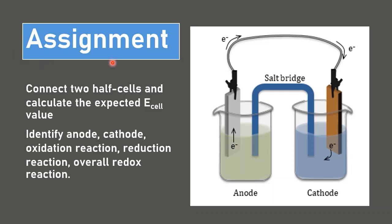Each group has an assignment. You need to construct a galvanic cell by connecting two half-cells and calculate the expected e-cell value using the standard reduction potentials from Table 7.1. From your two half-cells, identify which would be the anode and which the cathode, what the oxidation and reduction reactions are, and what the overall redox reaction is. This is all for experiment number seven — see you in each section on Monday and Tuesday.